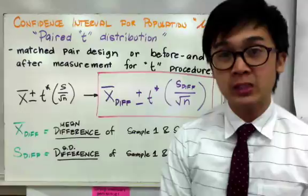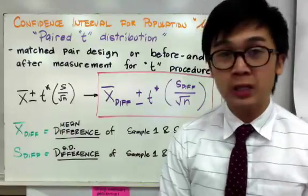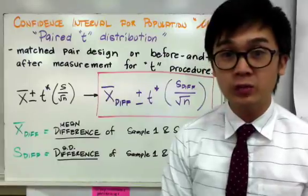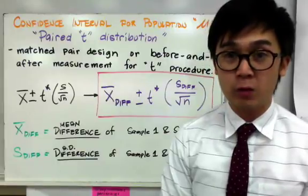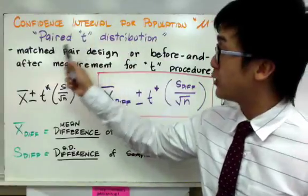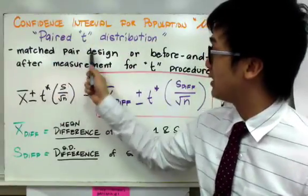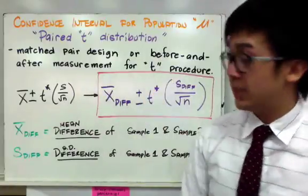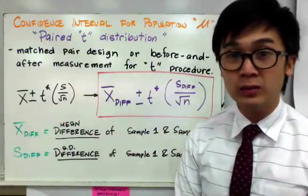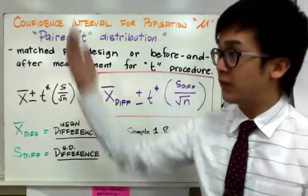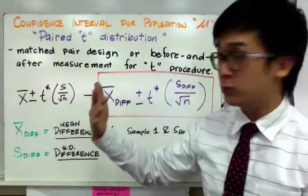Now we're still going to use the T distribution, but this time we're going to be presented with two samples and we need to concentrate on the mean difference of both samples. Now paired T distribution or paired T design, also known as the matched pair design or before and after measurement for T procedure, is basically seeing two samples and you are focused on the mean difference of sample one and sample two.